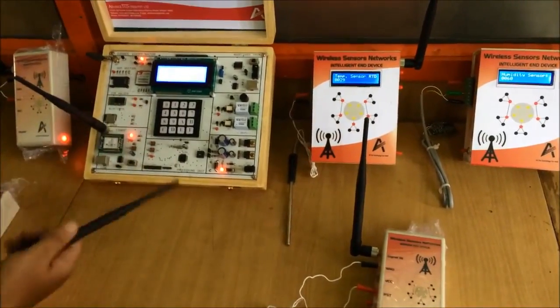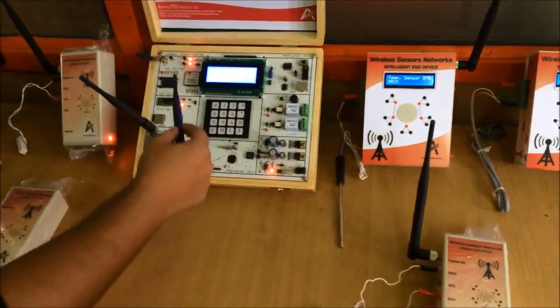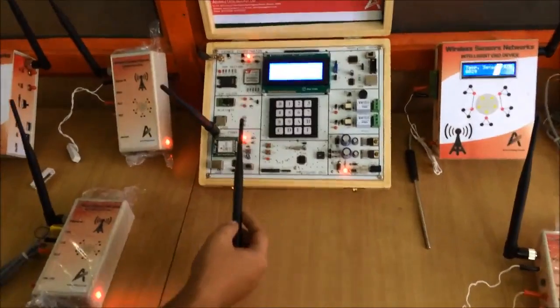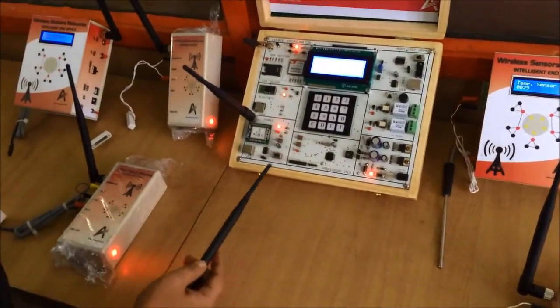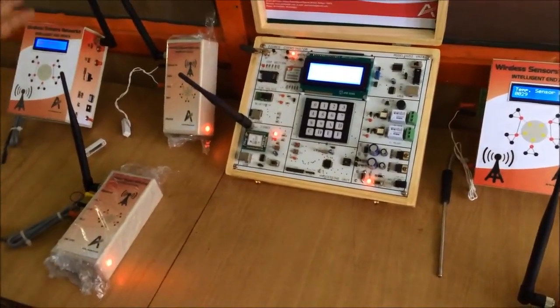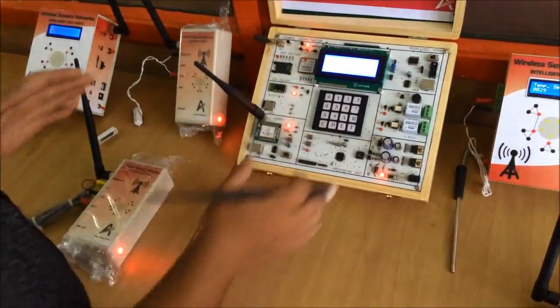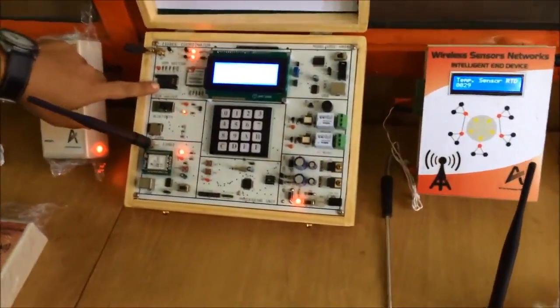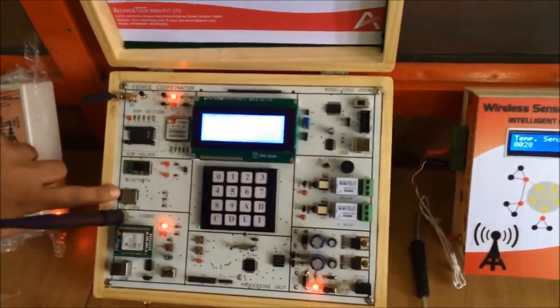And what are the provisions on this board is, you can see here GSM section, Bluetooth and SD card, relay section and USB interface. After having some values on LCDs, we can transmit those values through GSM, through Bluetooth and SD card.